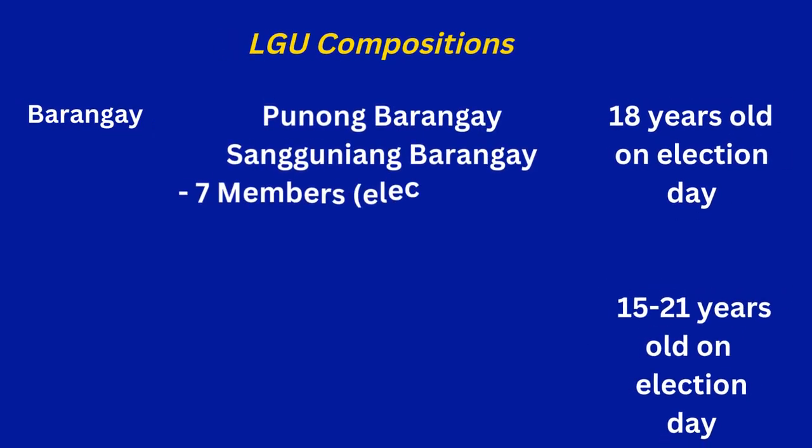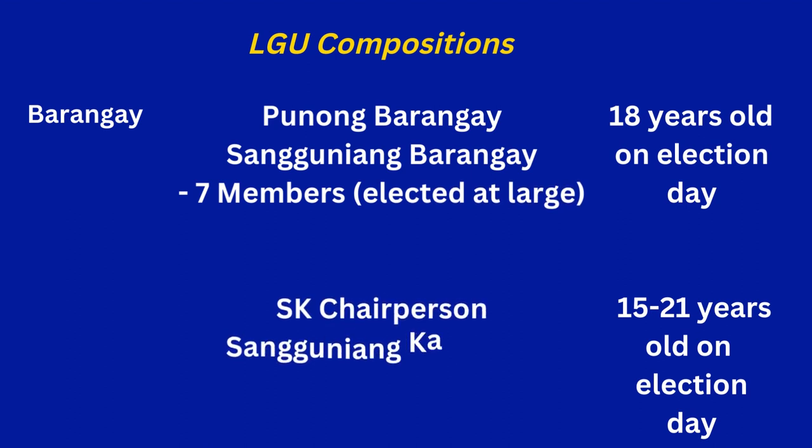The smallest political unit of the local government units is the barangay. Their head is the Punong Barangay, also known as the barangay chairman or barangay captain, who must only be 18 years old on election day. Its members are also elected at large. For the Sanggunian Kabataan, the chairman and up to seven members must be 15 to 21 years old on election day.